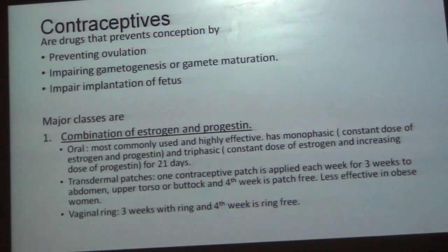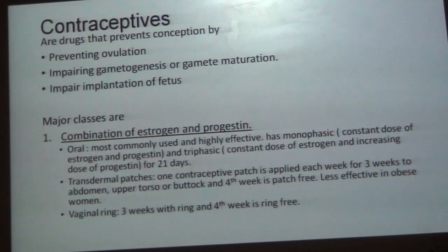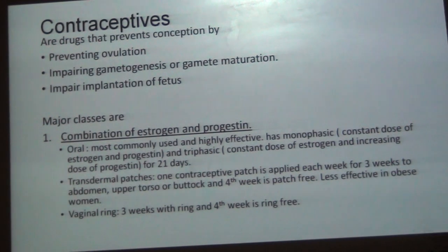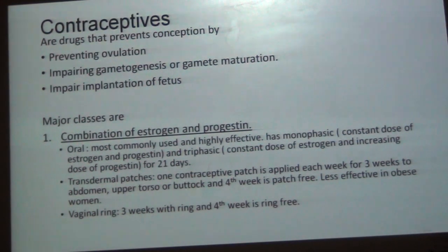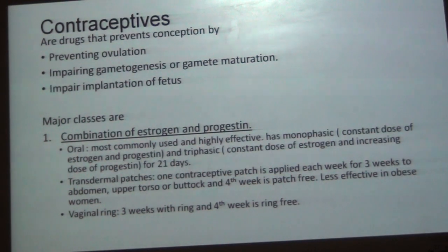Monophasic and triphasic drugs are used for 21 days, and the remaining 7 days a placebo is used; as soon as the hormone therapy stops, bleeding occurs. Transdermal patches involve applying a single contraceptive patch each week for 3 weeks to the abdomen, upper torso, or buttock, and the 4th week is patch-free. It is less effective in obesity. The vaginal ring is inserted for 3 weeks and the 4th week is ring-free.